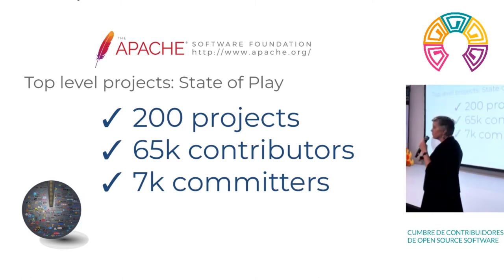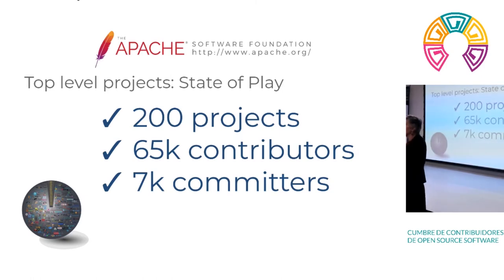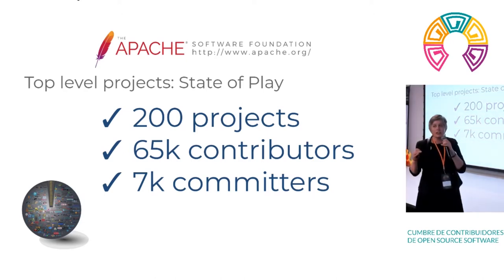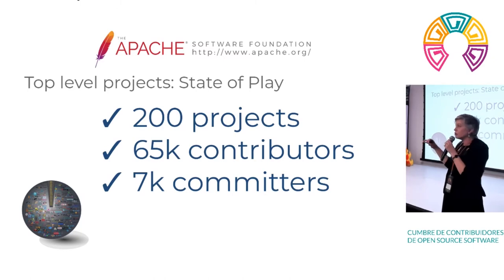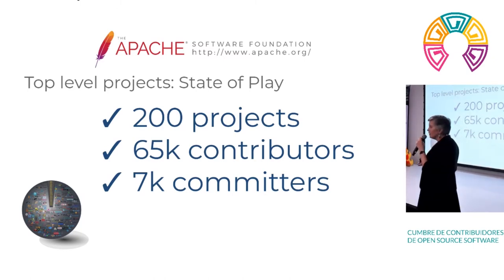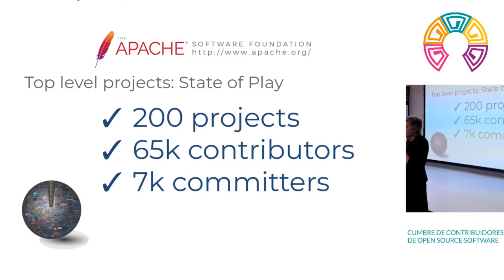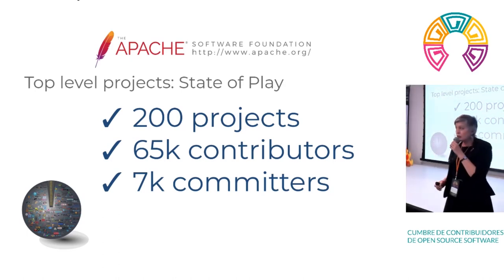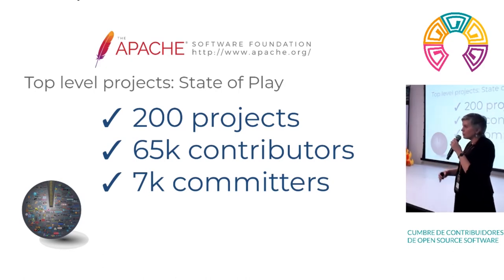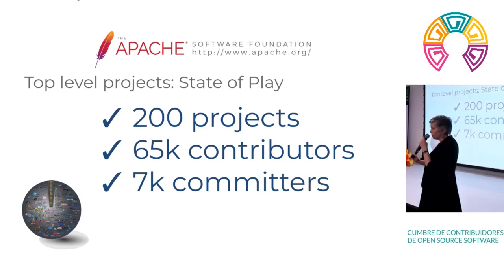We have 200 top-level committees — or to be precise, 350 projects under those committees. We have 65,000 contributors — that's the number of people who have contributed code to some project at any time, which you can basically see through GitHub. We have 7,000 committers, who are people who have received the right to submit code to the repositories without extra barriers.